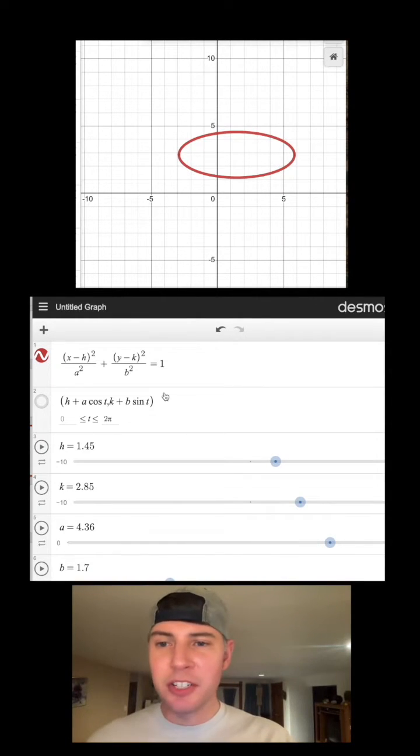Here it is in Desmos if you want to see it. Notice this is a plotted point that's x, y. The x is equal to h plus a cosine t, and that y is equal to k plus b sine t. If I turn this on, you'll see that it's right on top of that.